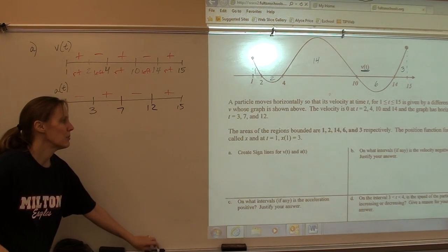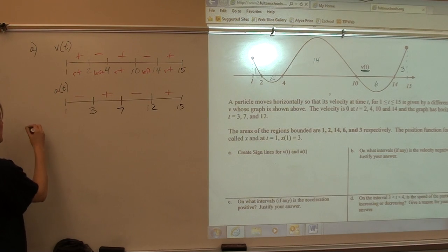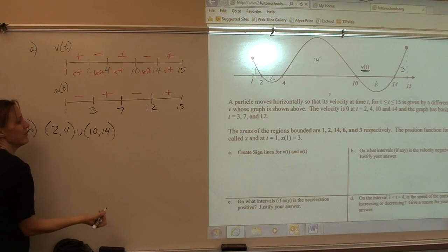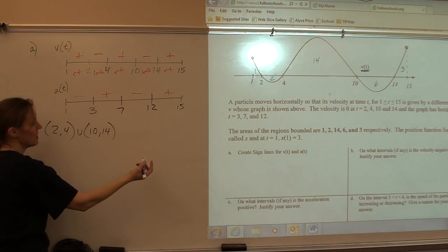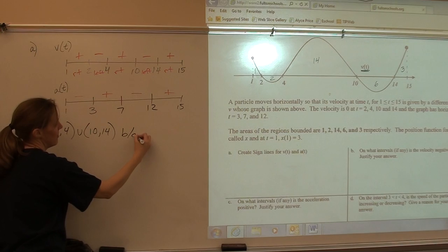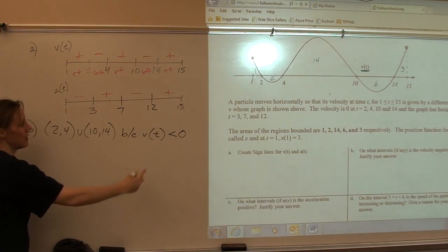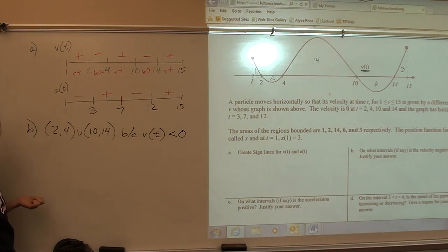So for letter B, letter B says, on what intervals is the velocity negative? Just answer it. So when is the velocity negative? 2 to 4 and 10 to 14. It says justify. I mean, there's not really justification for this. Saying that velocity is negative because it's less than 0 is kind of silly. It's like saying it's negative because it's negative, right?